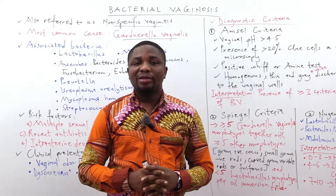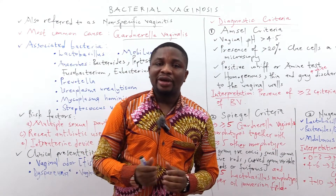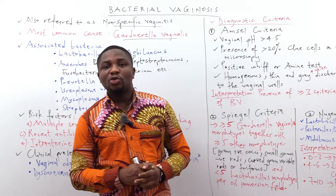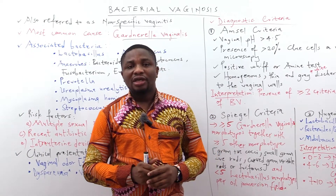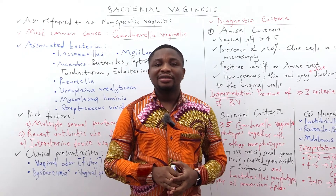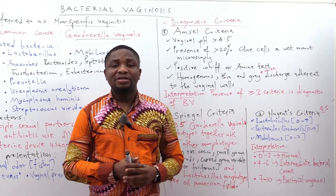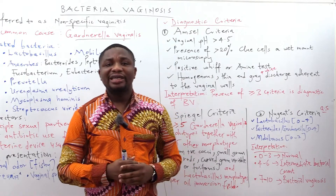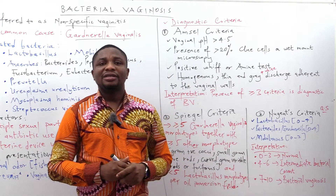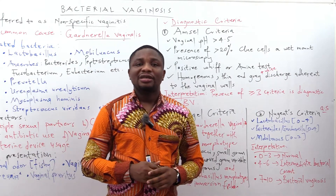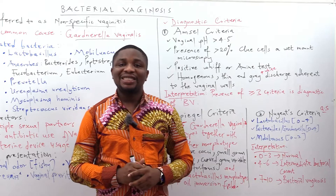Let's talk about the diagnostic criteria of bacterial vaginosis. We are going to discuss three criteria, of which one is the most commonly used. The most commonly used is the AMSEL criteria. It is rapid, easily accessible, and does not require expert personnel to acquire its components. Currently, worldwide, the AMSEL criteria is the most commonly used criteria in the diagnosis of bacterial vaginosis.